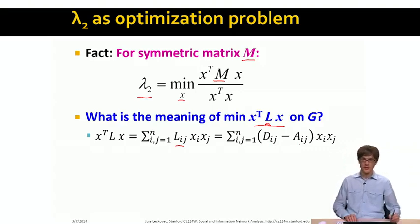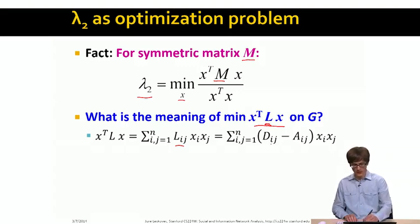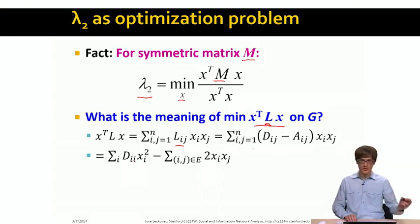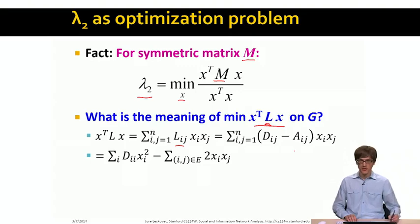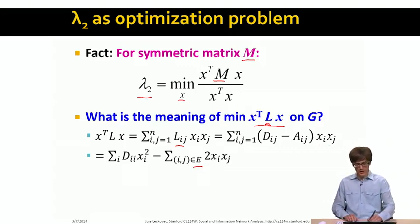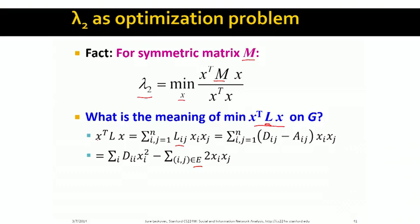The definition of L is simply the degree matrix minus the adjacency matrix. So instead of writing Lij we write Dij minus Aij. Distributing Xi Xj inside the parentheses, for the first part we get a summation over i of Dij times Xi squared — because the degree matrix is diagonal. For the second part, A times X is the sum over the neighbors, so this is simply a summation over all the edges, and because I have Xi Xj appearing twice, I get twice Xi times Xj.